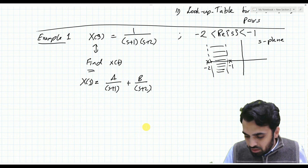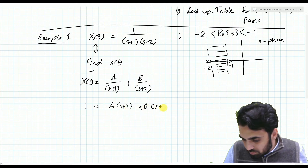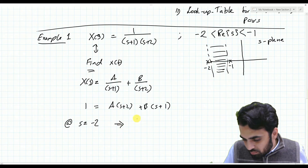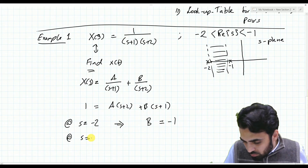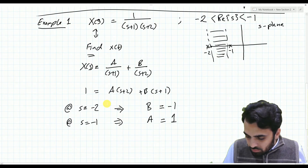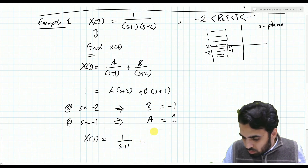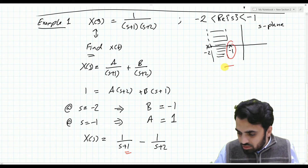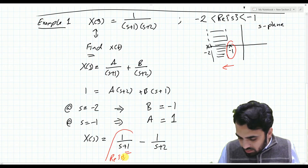Solving for coefficients: we have 1 equals A(s+2) plus B(s+1). At s = −2 we extract B, giving B = −1. At s = −1 we extract A, giving A = 1. So X(s) = 1/(s+1) − 1/(s+2). The pole at −1: its ROC is to the left of it, meaning the real part of s is less than −1.